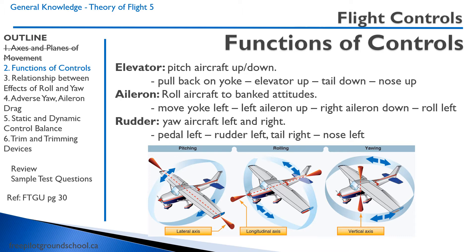If we move the yoke or the stick to the left, the left aileron goes up and the right aileron goes down. For the rudder, they are controlled by the rudder pedals. If we push the left rudder pedal, the rudder will go to the left. The tail will go to the right, which forces the nose left.